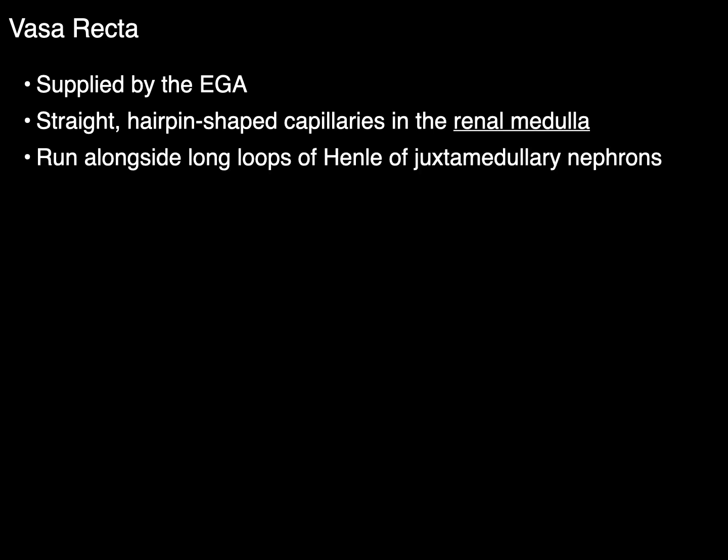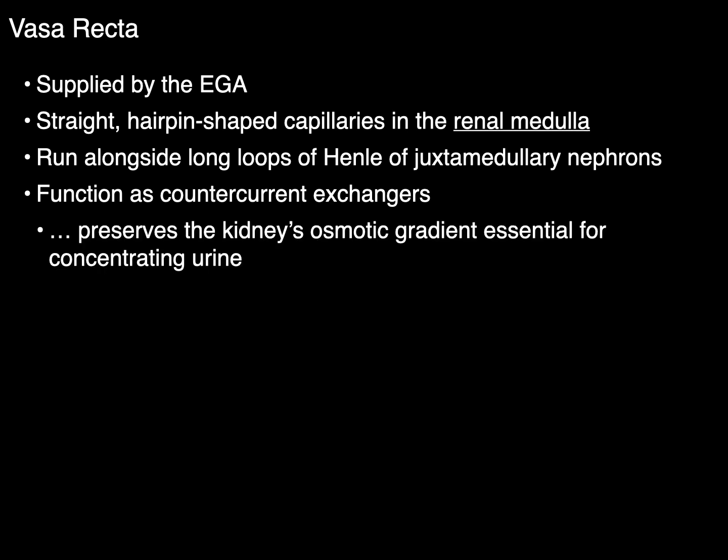So the vasa recta are supplied by the efferent glomerular arterioles and they're straight hairpin shaped capillaries in the renal medulla. They run alongside these long loops of Henle of juxtamedullary nephrons and they function as counter current exchangers, and this is what preserves the kidney's osmotic gradient essential for concentrating urine.